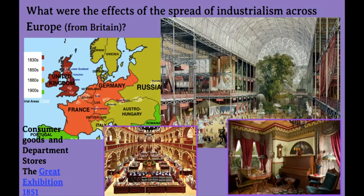As you can see on this map, industrialization took over the UK in the 1830s. By the 1850s, it took over Western Europe — Germany, France, Belgium, Netherlands, Switzerland, etc. By the 1880s, it had expanded across Russia, Austria, Hungary, Italy, Sweden, Norway. And by the 1900s, it hit the rest of Europe — places like Spain, Portugal, Romania, all the way down to the Ottoman Empire.